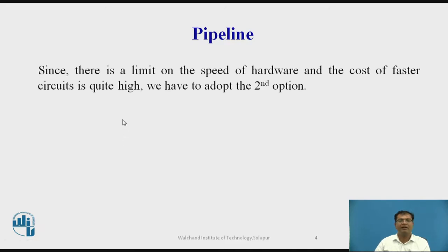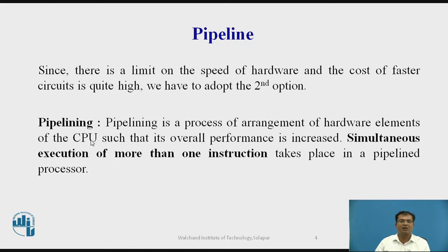Since there is a limit on the speed of hardware and the cost of faster circuits is quite high, we are supposed to adopt the second option. Pipeline is a process of arrangement of hardware in such a way that CPU performance will be increased and simultaneous execution of more than one instruction takes place.